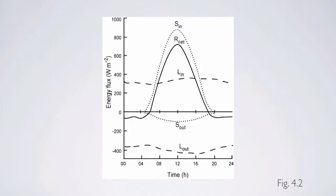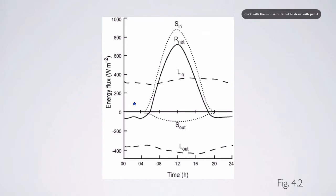There are daily patterns to the energy balance of ecosystems, and we often average over an annual or daily basis. Over the course of a day, shortwave radiation coming in is near zero at night since there's no daylight, then increases from dawn until solar noon, and then goes down again. The amount of longwave radiation coming in tends to be relatively constant, but a little bit higher in the afternoon than in the morning.